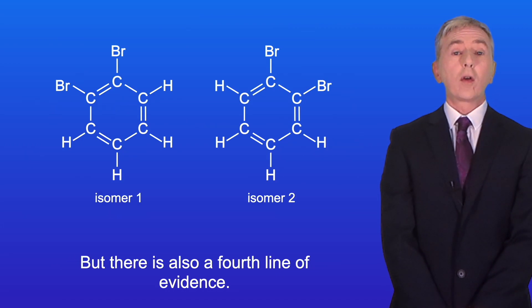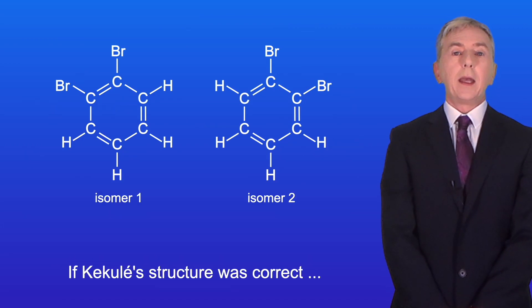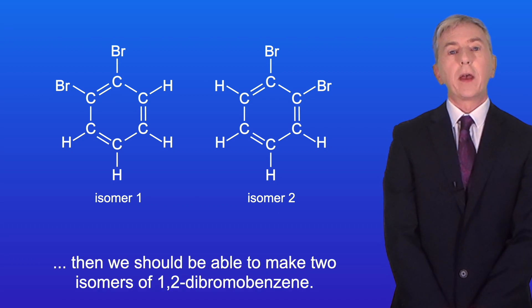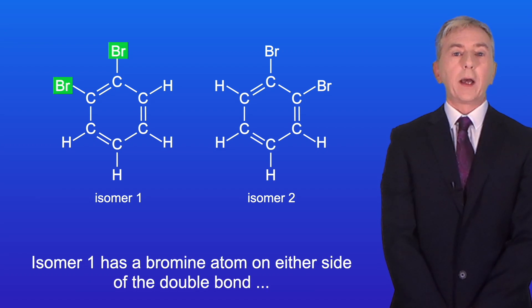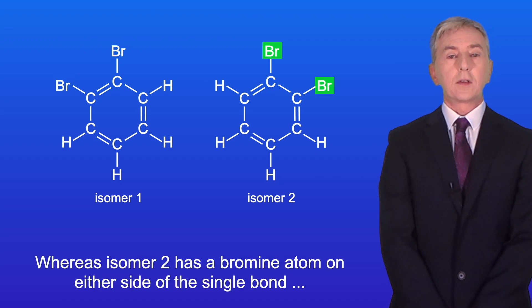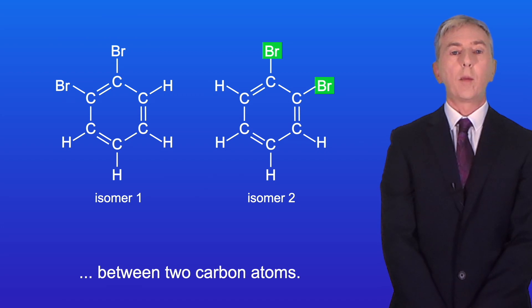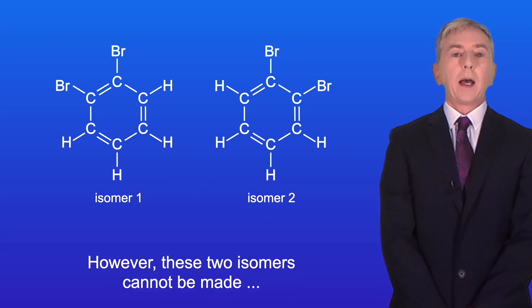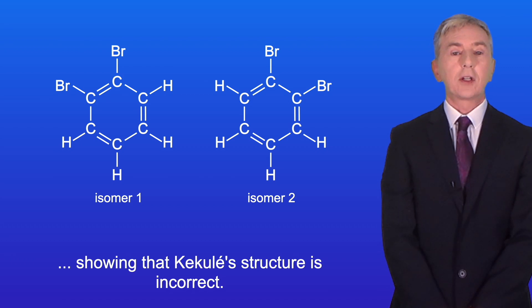But there's also a fourth line of evidence. If Kekulé's structure was correct, then we should be able to make two isomers of 1,2-dibromobenzene. Isomer 1 has a bromine atom on either side of the double bond between two carbon atoms, whereas isomer 2 has a bromine atom on either side of the single bond between two carbon atoms. However, these two isomers cannot be made, showing that Kekulé's structure is incorrect.